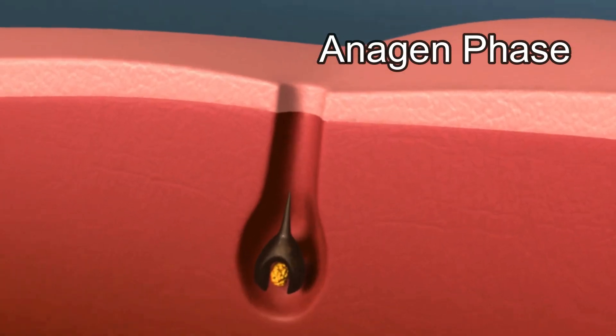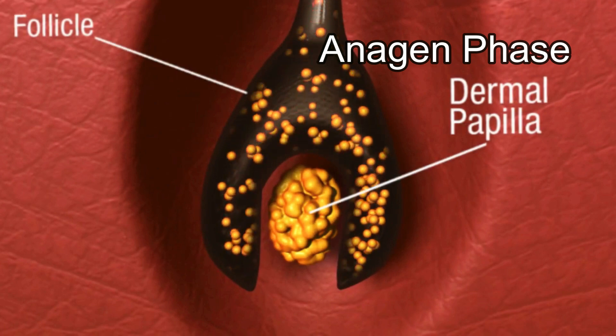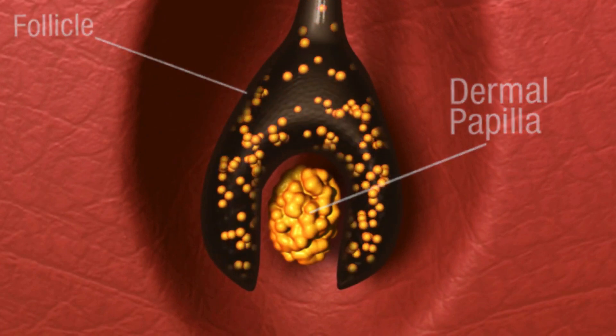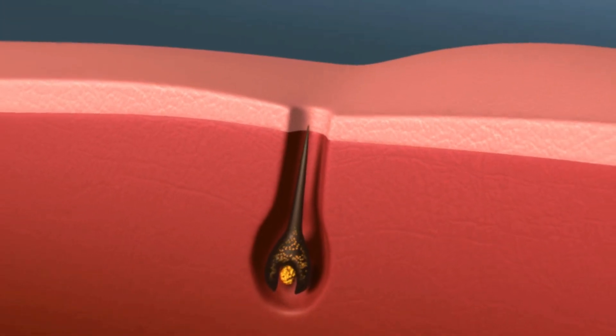During the catagen phase of the hair growth cycle, your hair follicle is shutting down its active growth process. One of the key characteristics of the catagen phase is the hair follicle beginning to shrink. That is what the hair follicle is doing in the catagen phase — it's shrinking.